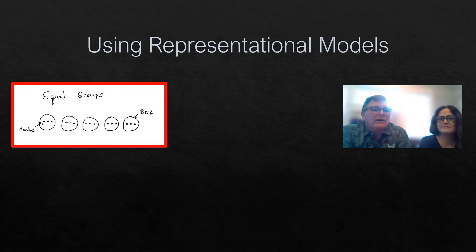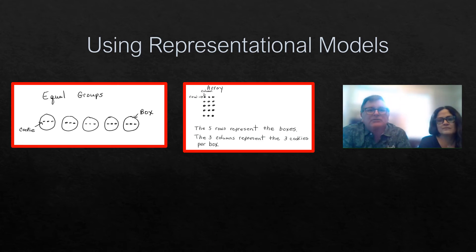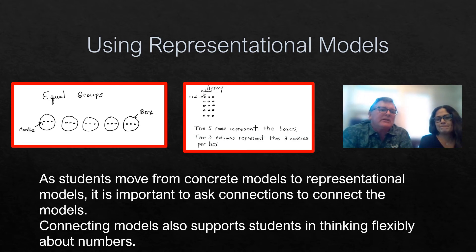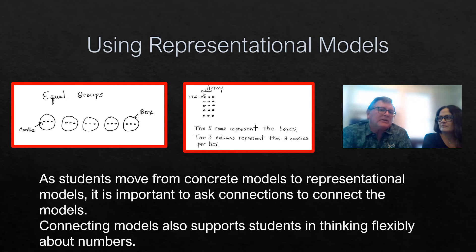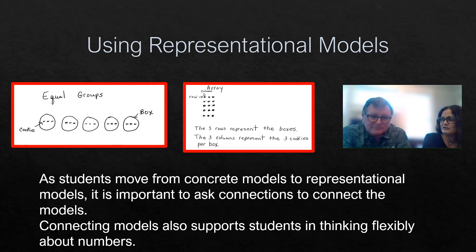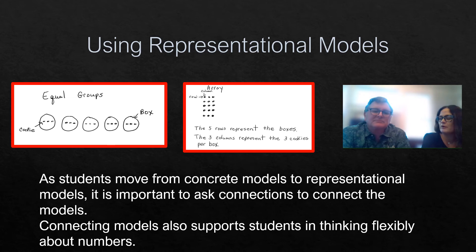From concrete models, we want to move to representational models — typically drawings. You see equal groups here and arrays. This is related to the cookie problem. What do you notice about all these representational models? I noticed that there are labels, and that goes back to my earlier question with the concrete materials — we really need to identify what each element represents in the problem. This drawing supports that with the labels.